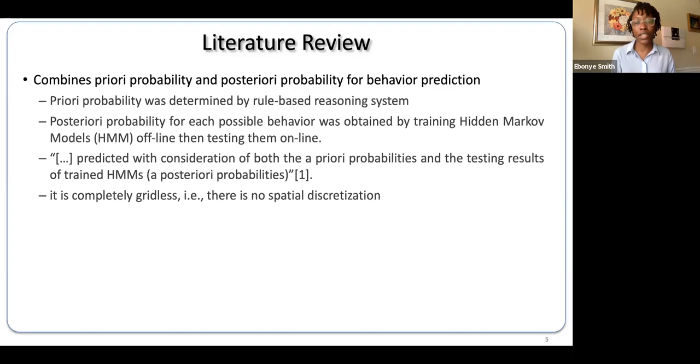This means that in their experiment, they combine the use of the probability of an action occurring without prior knowledge of observation in conjunction with the probability of an action occurring with knowledge of prior observation.